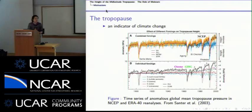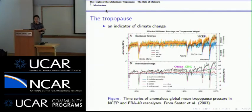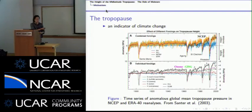The tropopause is also an important indicator of climate change. A time series of anomalous global mean tropopause pressure shows a consistent rising trend in tropopause height over the second half of the 20th century, in addition to variability from volcanic eruptions. This trend is attributed primarily to greenhouse gas increases — shown in green — and stratospheric ozone depletion — shown in purple.